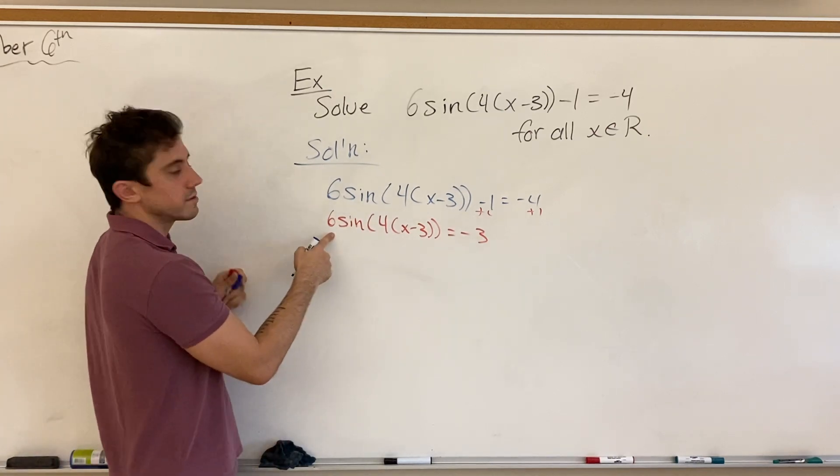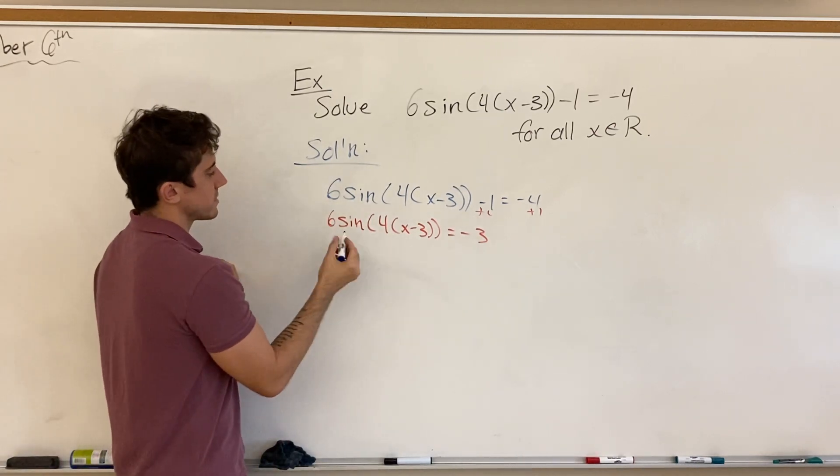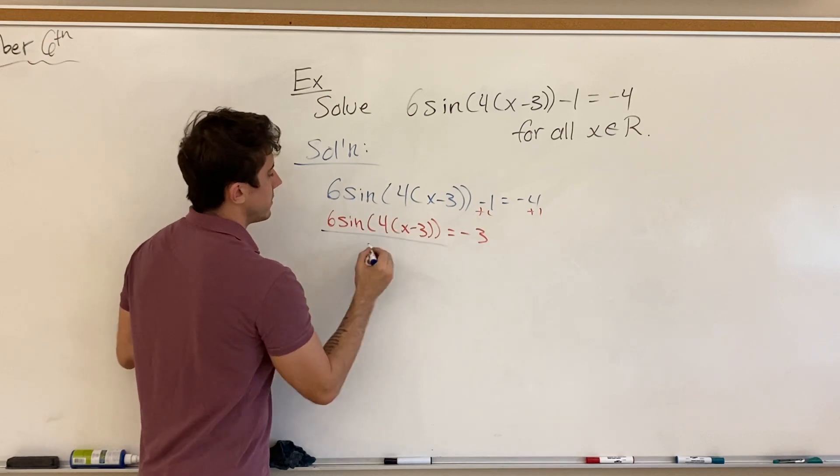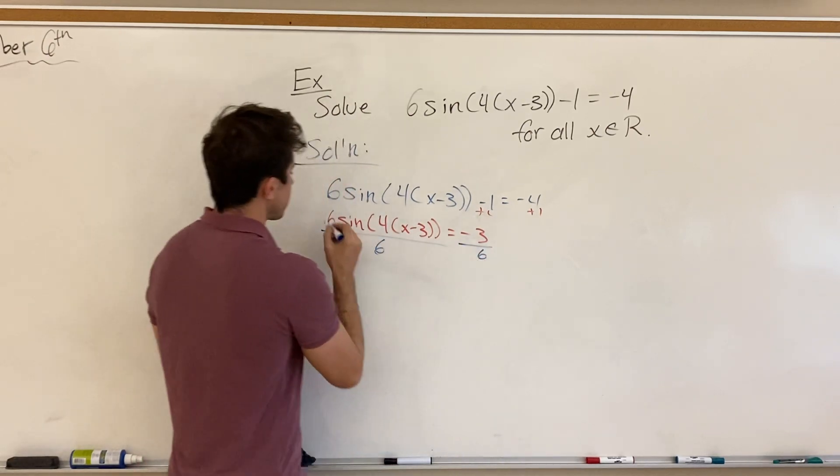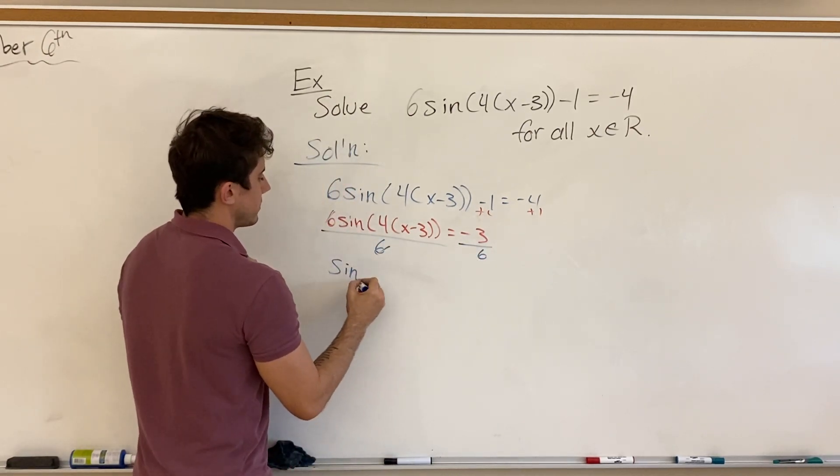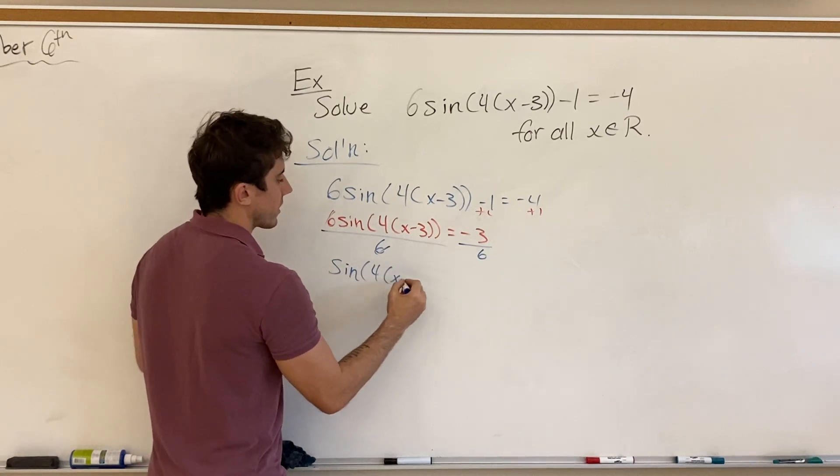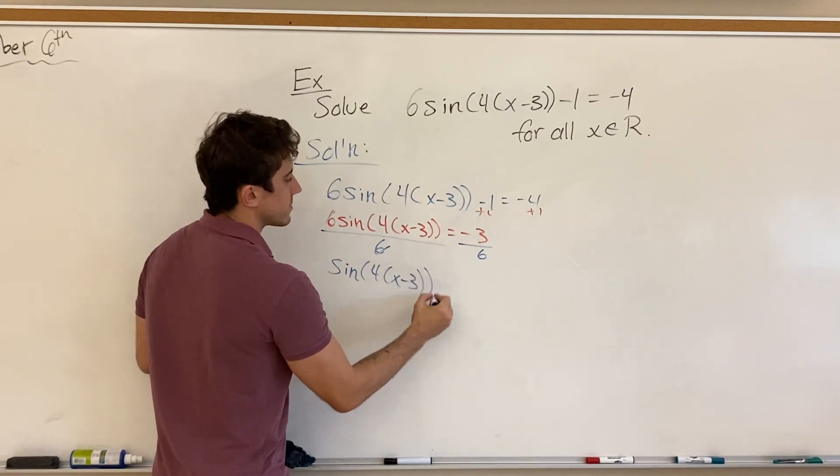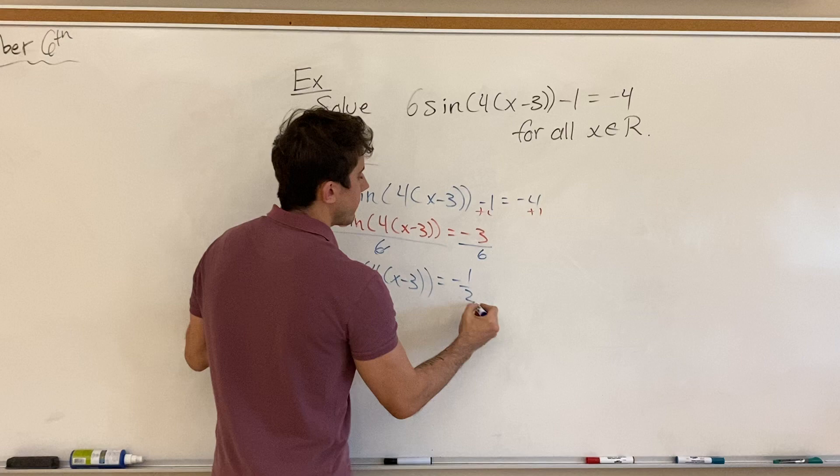And next step, of course, we're going to deal with the vertical stretch, the 6 in front of the sine. And so we can divide both sides by 6, and get sine of the 4 bracket x minus 3 is equal to negative 1 half.